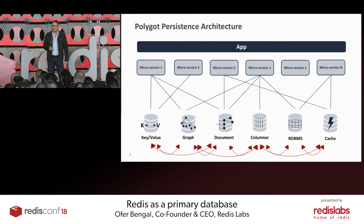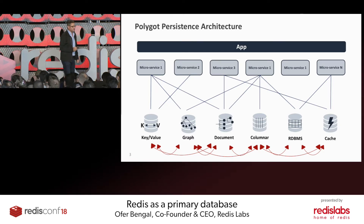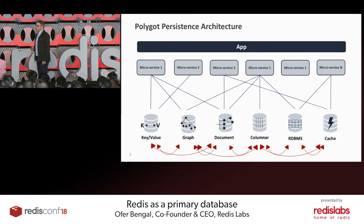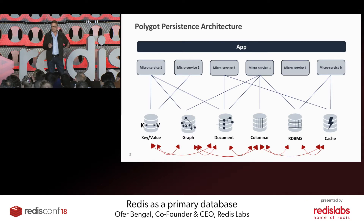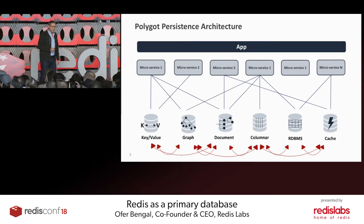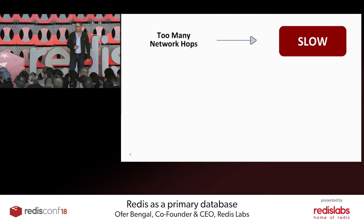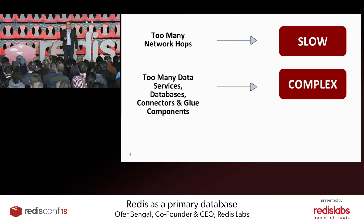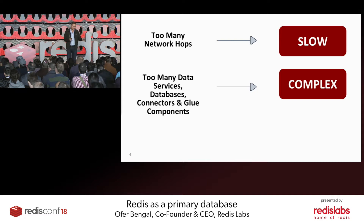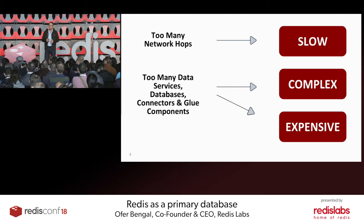Modern applications use what we call Polyglot Persistent Architecture, by which multiple microservices communicate with one or more data services and those databases communicate among themselves and send data to one another. The limitations of this approach are: first, there are too many network hops, which may make the application slower. Secondly, you have too many data services, too many connectors, too many glue components, and it tends to get complex and expensive because on the cloud you pay separately for each of those microservices and data services.